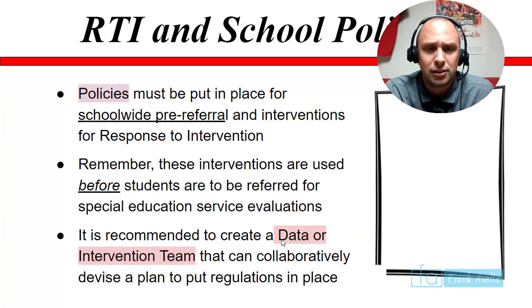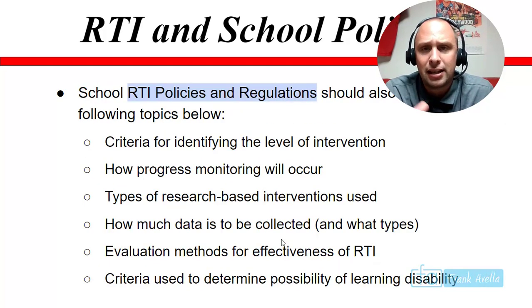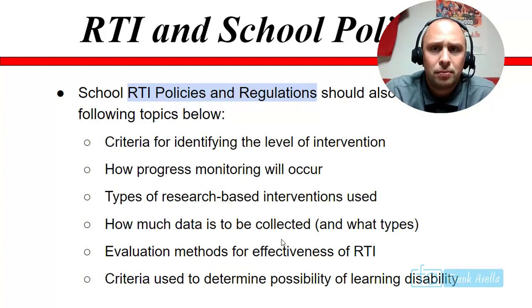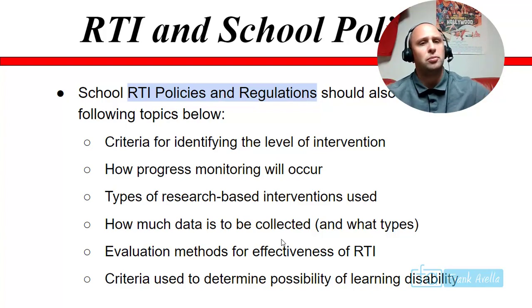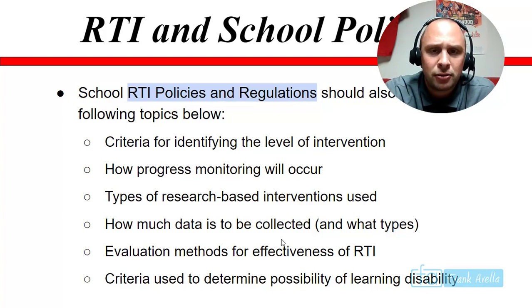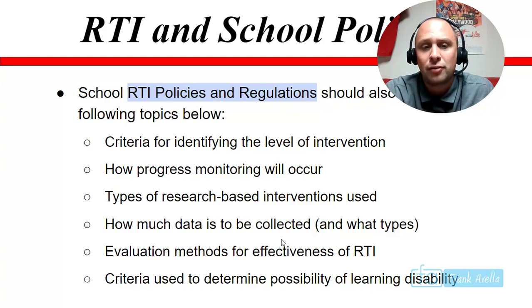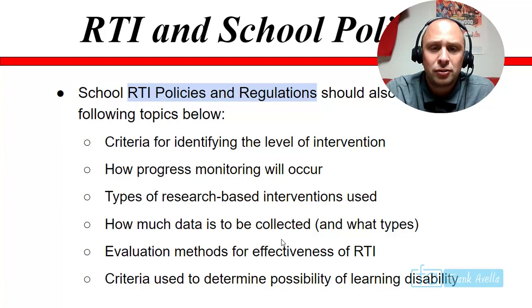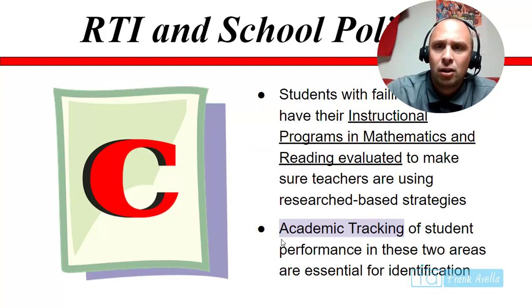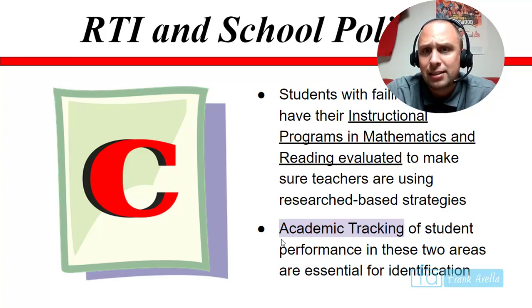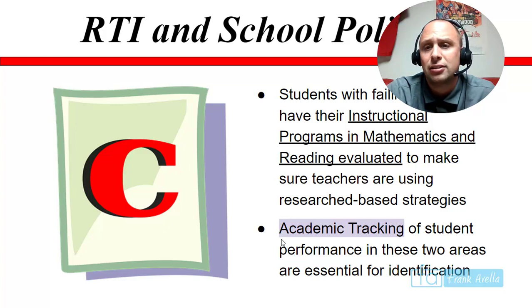School RTI policies should address the following topics: criteria for identifying the level of intervention — what makes a student eligible for tier one, two, or three; how to progress monitor students; what types of research-based interventions are used; how data is collected; evaluation methods for effectiveness; and criteria to determine the possibility of a learning disability, meaning when to refer someone to special education services. Students with failing marks will have their instructional programs in mathematics and reading evaluated to ensure teachers are using research-based strategies. Academic tracking of student performance in these two areas is essential for identification.